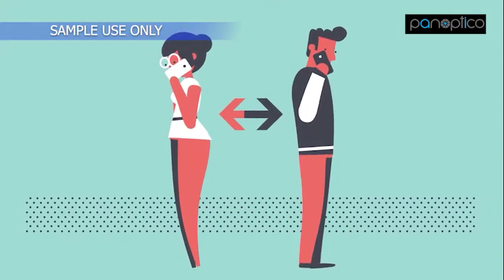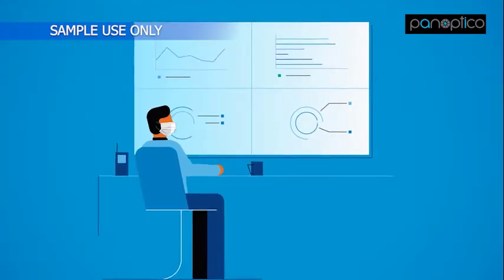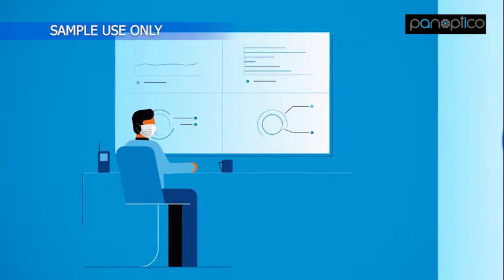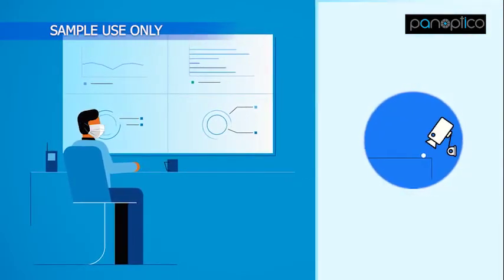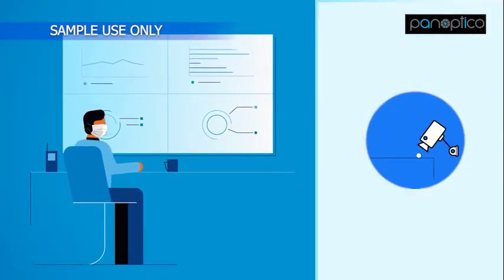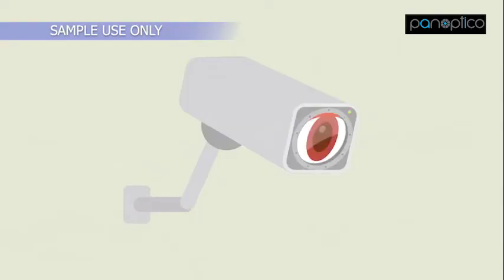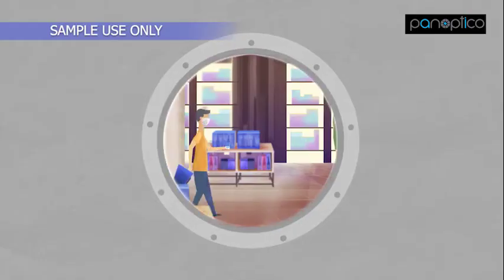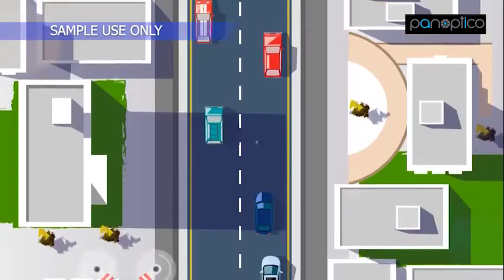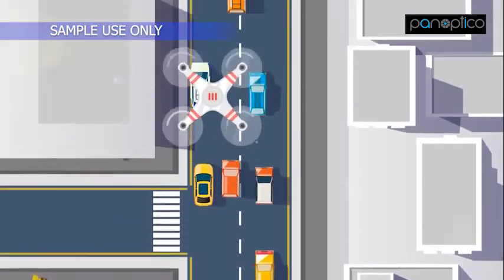Social Distancing Monitoring: In order to monitor social distancing strictly, we have embedded a tracker-based algorithm which measures the distance between people. This feature can work in any height or angle of the camera from where the people are visible. This feature can also be installed in drones.